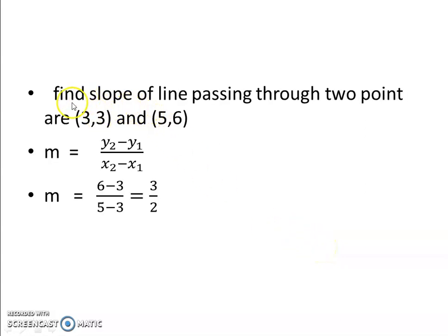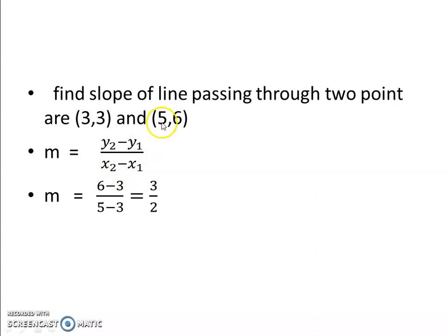Hence, always remember: the slope of a line passing through two points is m equal to y2 minus y1 upon x2 minus x1. Another example: find the slope of a line passing through the two points (3, 3) and (5, 6). Consider the first point as (x1, y1) and the second point as (x2, y2). Applying the formula: m equal to y2 minus y1 upon x2 minus x1, so 6 minus 3 upon 5 minus 3, giving 3 upon 2. Always remember: first point is (x1, y1), second point is (x2, y2), and apply y2 minus y1 upon x2 minus x1 with their positive signs.